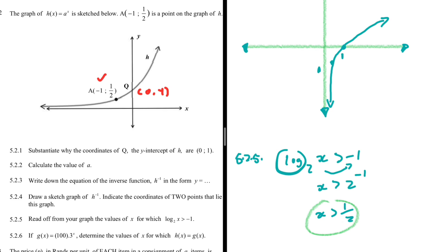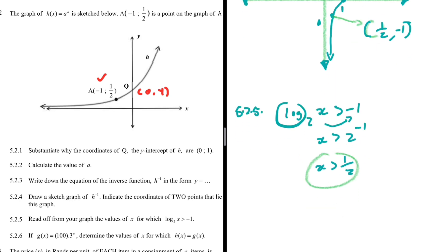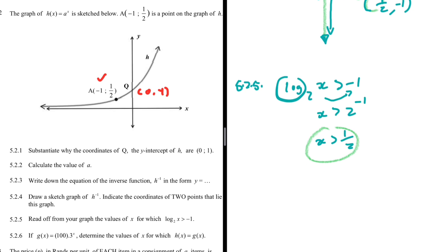This is easy to confirm from the graph as well — the point A' has coordinates (½, −1), so for x-values greater than ½ the graph lies above y = −1.